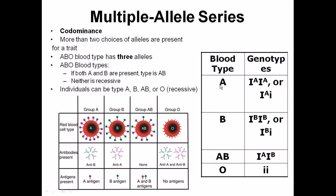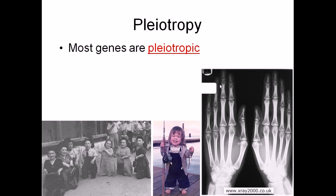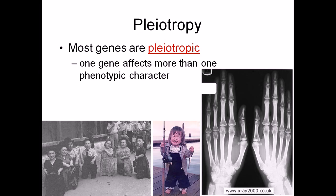Hello guys. Now what is pleiotropy? Pleiotropy means one gene is affecting multiple characters — one gene controlling multiple characters. It affects more than one phenotypic character. As you can see here, the example is of dwarfism, where one gene affects more than one trait.